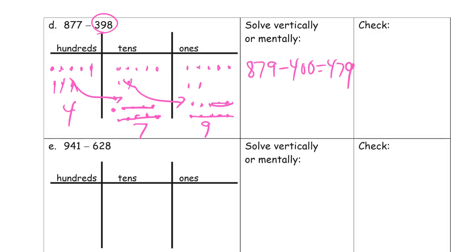So checking it. 479 plus the 398. Starting with the ones digits. 9 plus 8. 17. I have to compose a ten. Looking at our tens digits. There's a 1 and a 9 I can put together to make 10. And then add that to the 7 for 17. That means I have to compose 100. And adding our hundreds digits. That's 4 and 3 and 1. And it adds up to 8. 877. And that's our minuend.